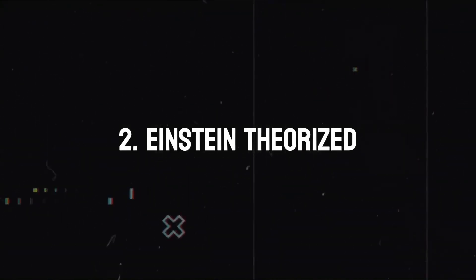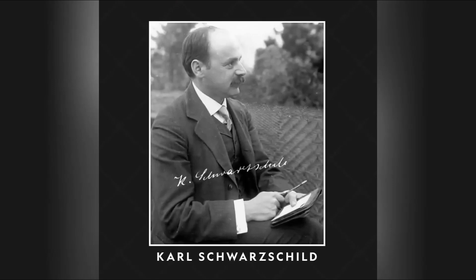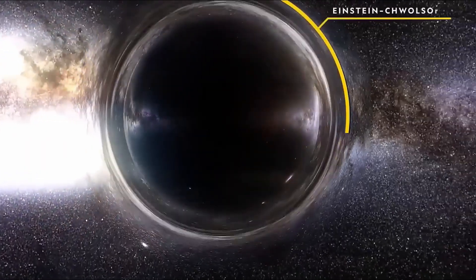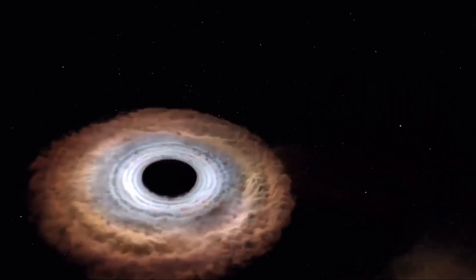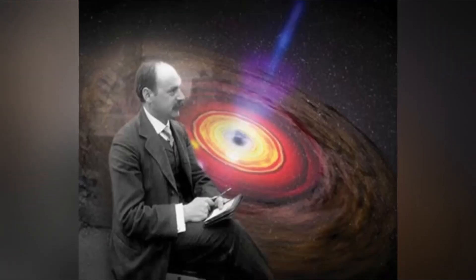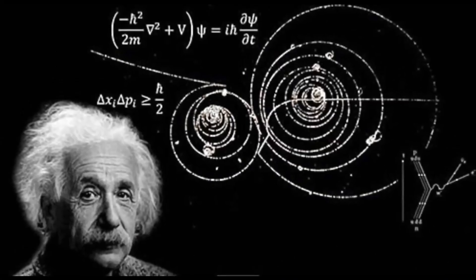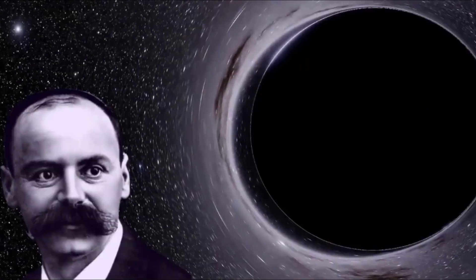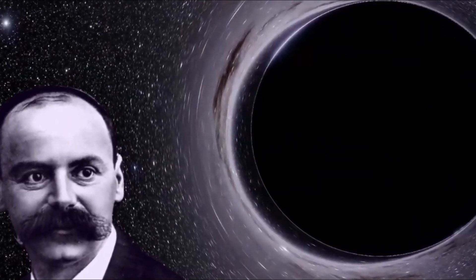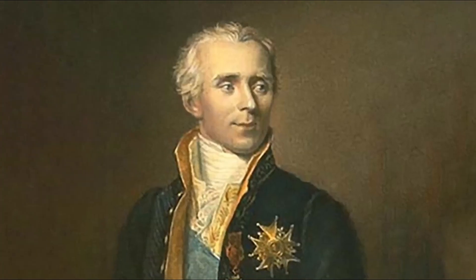Einstein theorized. Einstein didn't discover the existence of black holes, though his theory of relativity does predict their formation. Instead, Carl Schwarzschild was the first to use Einstein's revolutionary equations and show that black holes could indeed form. He accomplished this the same year that Einstein released his theory of general relativity in 1915. From Schwarzschild's work came a term called the Schwarzschild radius, a measurement of how small you'd have to compress any object to create a black hole.